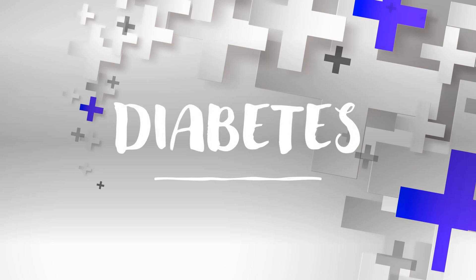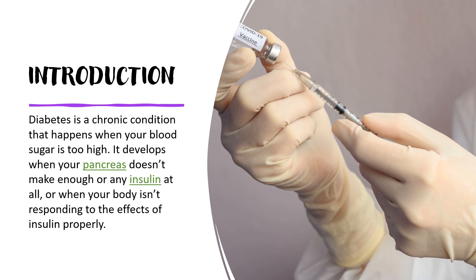Hello, I'm Dr. Hafsa. Today, my focus will be on providing a comprehensive overview of diabetes. Diabetes is a chronic and long-lasting condition that happens when your blood sugar or glucose is too high. It happens when your pancreas doesn't make enough or any insulin at all, or when the body isn't responding to the effects of insulin properly.